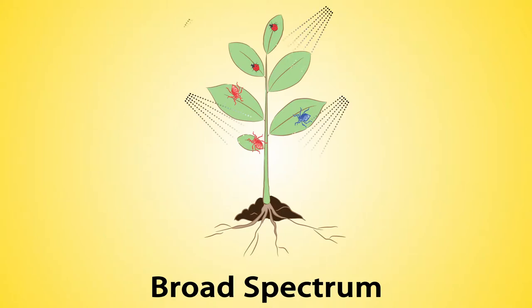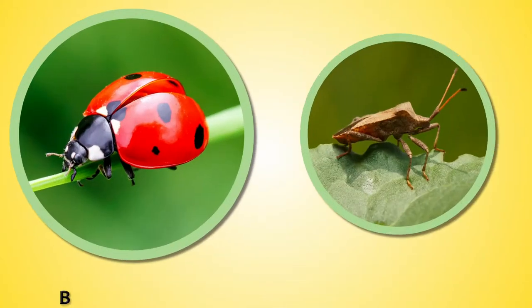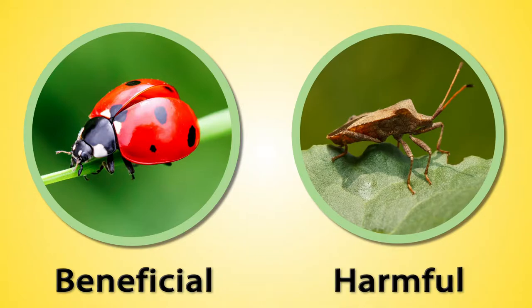Broad spectrum pesticides can kill or harm a wide variety of organisms, both beneficial and harmful pests, and then there are those that target a specific trait in a pest.